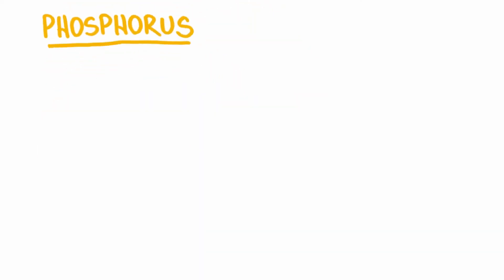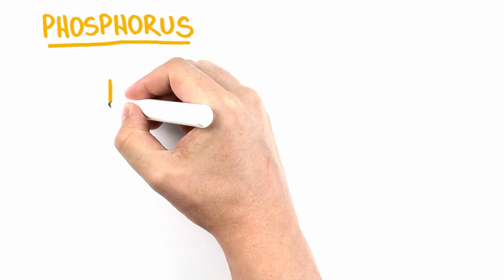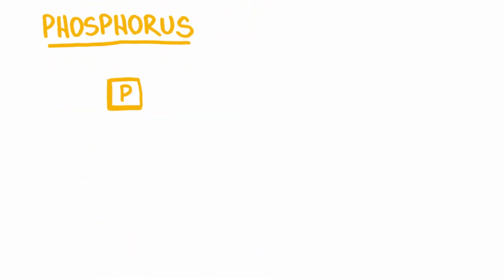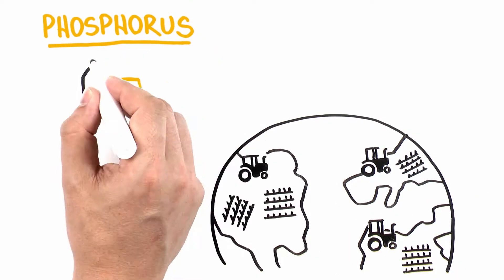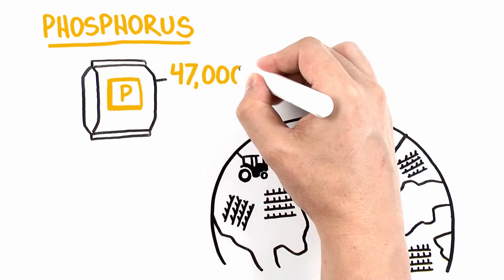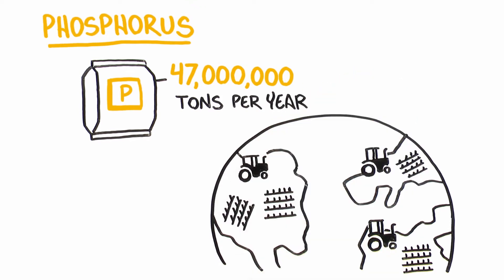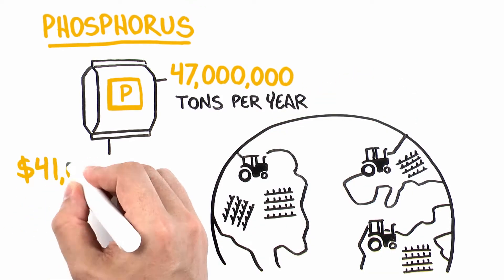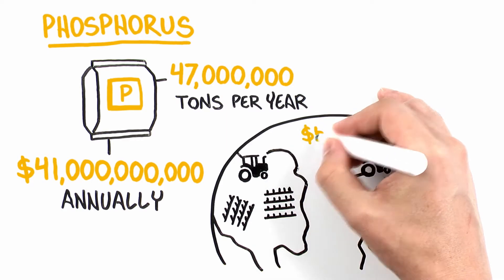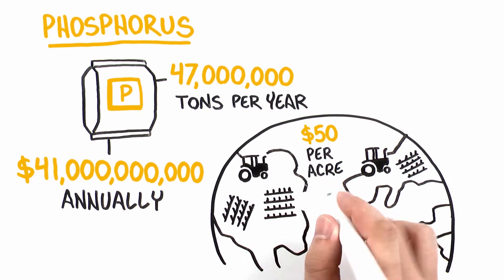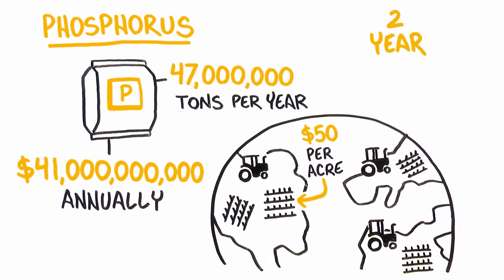Let's talk about phosphorus, the nutrient referred to as P. Globally, agriculture consumes about 47 million tons of phosphorus-based fertilizer per year, costing over $41 billion annually. Typical phosphorus fertilizer costs, based on crop removal amounts, can easily exceed $50 per acre for a two-year corn-soybean rotation.